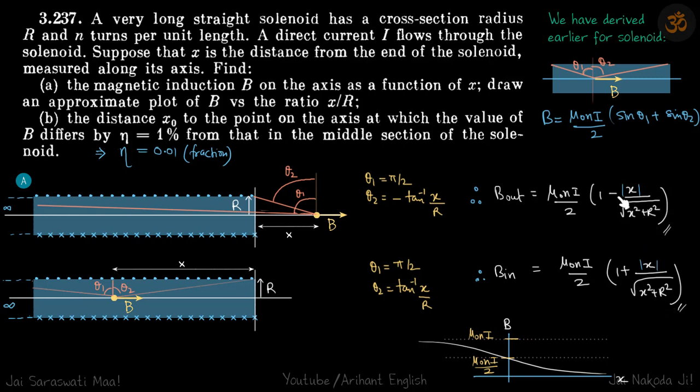You can see interestingly that if you go out at a distance x or you go inside at a distance x, the amount it decreases is same as the amount it increases. The amount it decreases outside the solenoid is x by root x square plus r square, which is the amount it increases from here as you go inside.